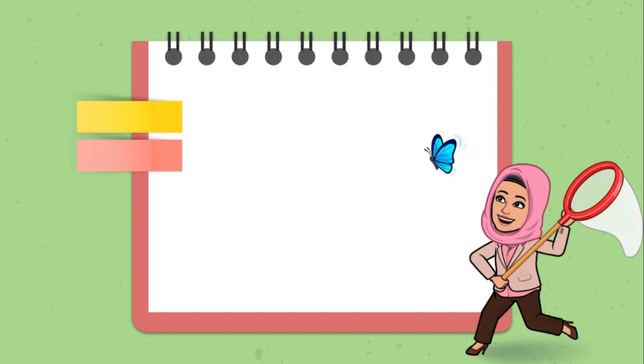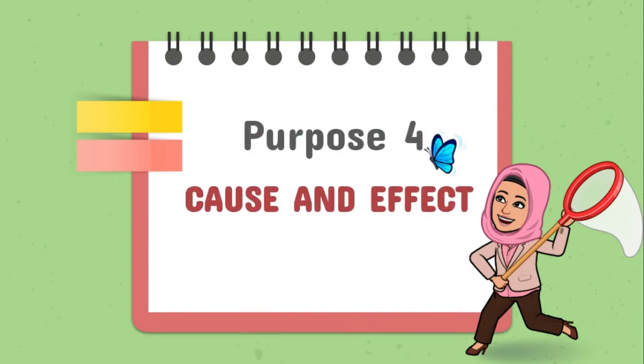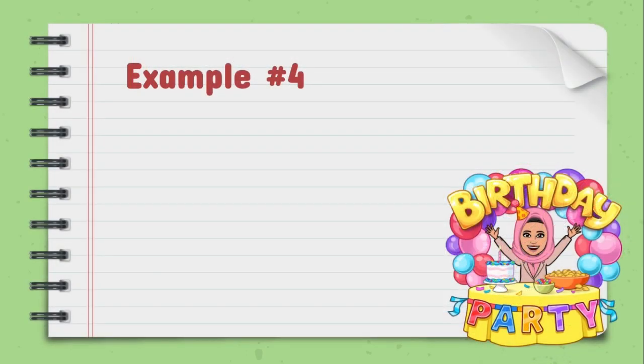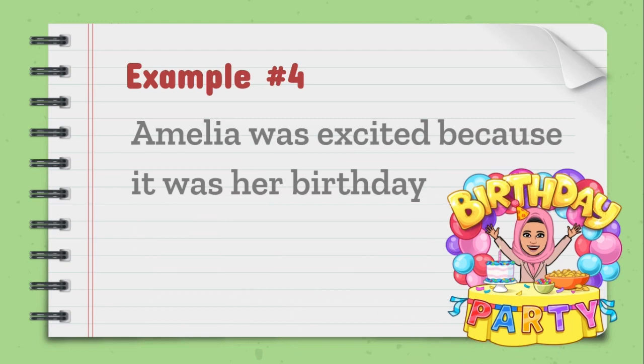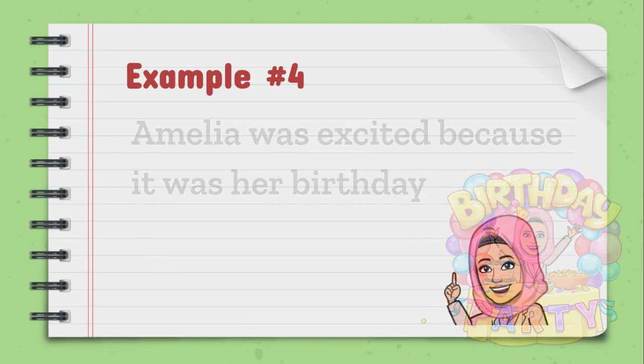Purpose number four is to show cause and effect. The connectives we use are because, as a result, therefore, so, etc. For example, Amelia was excited because it was her birthday.